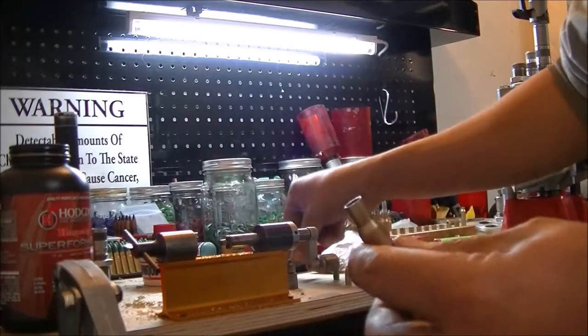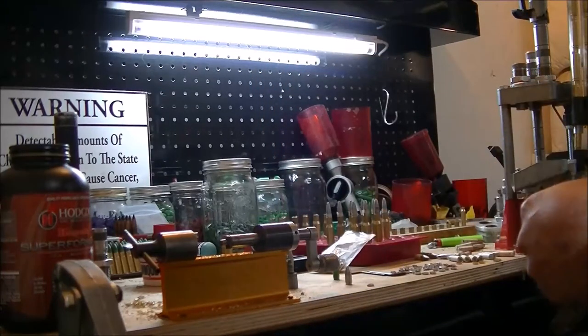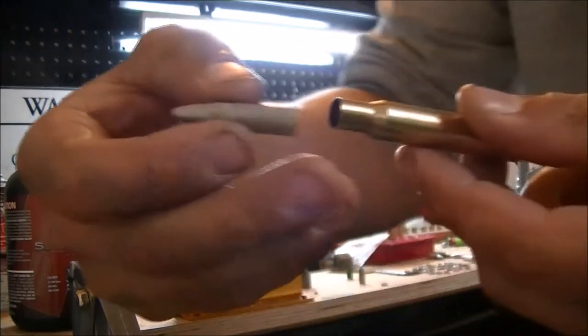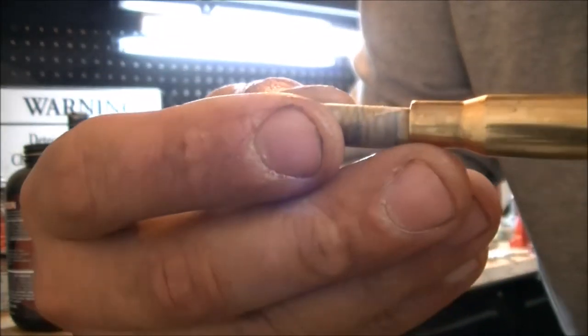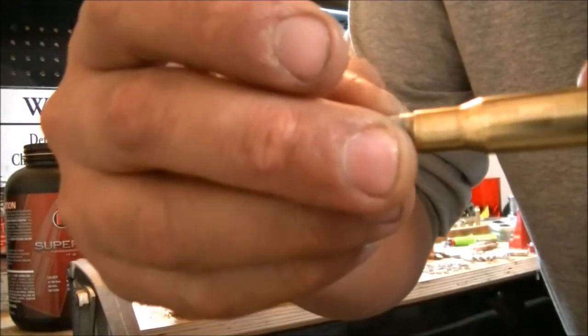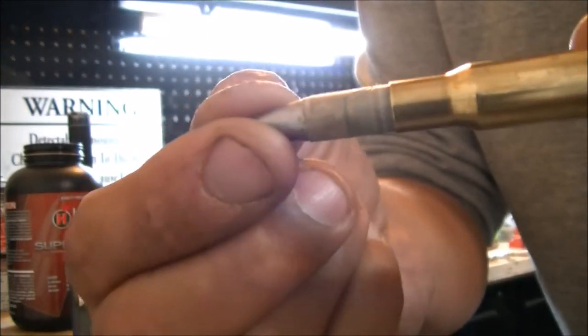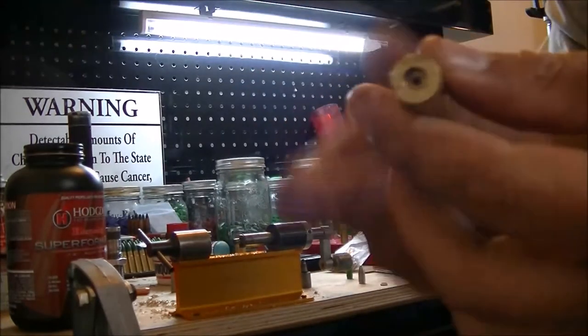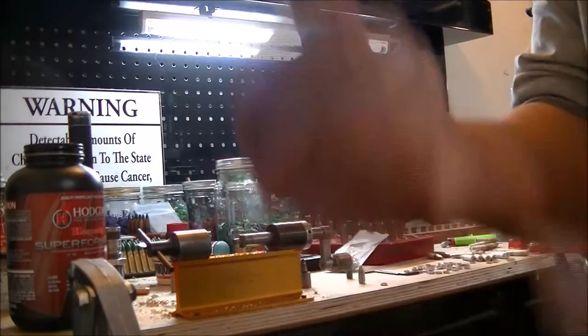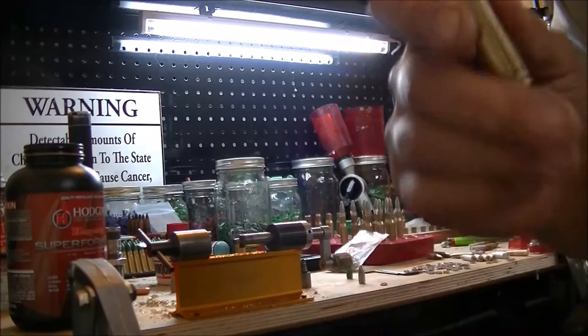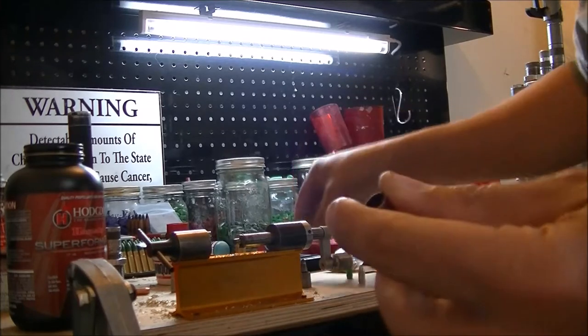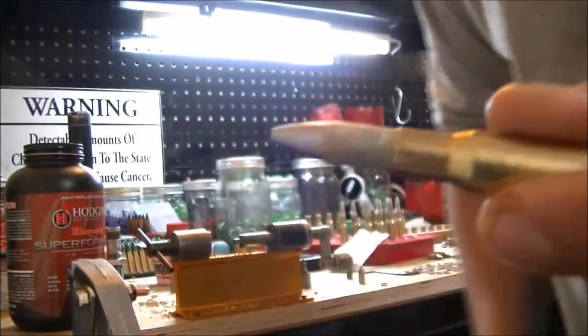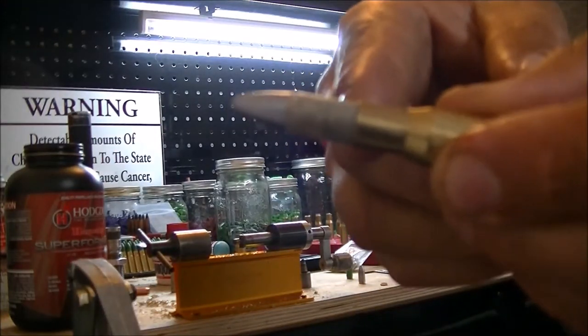For loading paper patch bullets, the first thing you could do is actually get a fire form case, something that was fired in your chamber that you paper patch match your barrel to. Here is just a regular fire form case out of my rifle and you can see that the paper patch bullet itself will slide in there pretty easy. You could use the Lee universal decapping die, decap your primer and seat a brand new one in after cleaning it, trimming the brass, and not resizing anything of the case at all. Seat your bullet as is with the powder loaded and give a slight roll crimp just to hold the bullet.